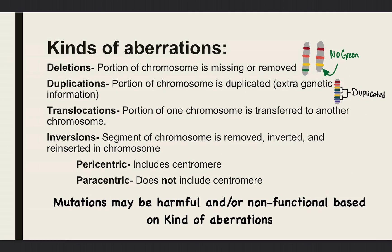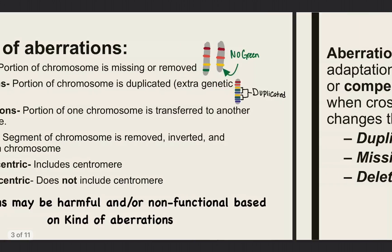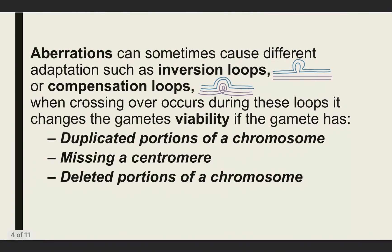It's pericentric if the inversion includes the centromere, and it's paracentric if the inversion does not include the centromere. Mutations may be harmful or nonfunctional based on the kind of aberration. Aberrations can sometimes cause different adaptations such as inversion loops or compensation loops.